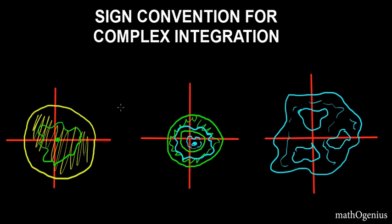The sign convention for complex integration — specifically, the sign convention regarding traversal of a closed path. That means when you traverse a path, is it a positive direction or a negative direction? We will use that for integration. When you are integrating in complex analysis over a region bounded by a curve.